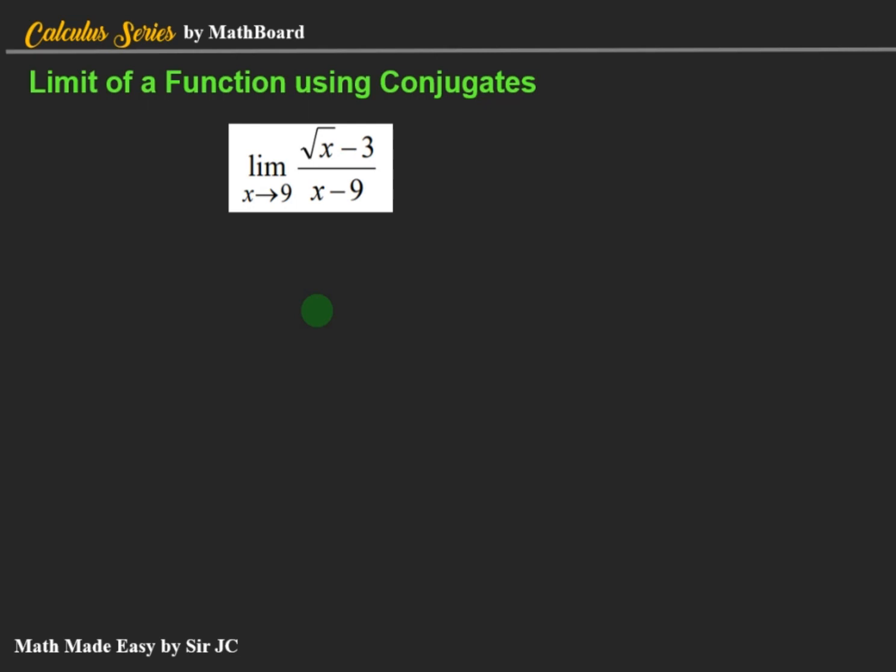How do we evaluate the limit of a function involving a radical expression in which, after direct substitution, the result is indeterminate? If that is the case, we are going to use the conjugates. We multiply the conjugate to the numerator and the denominator of the given rational function or expression involving a radical sign. That process is called rationalization.